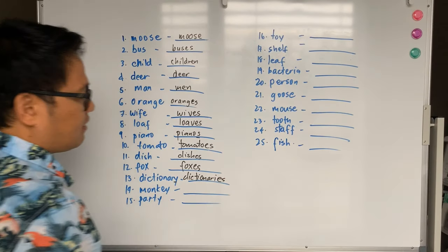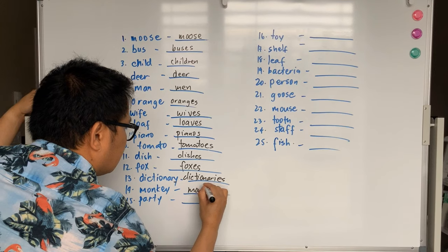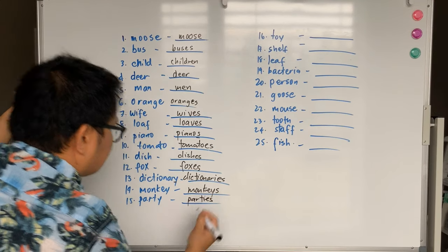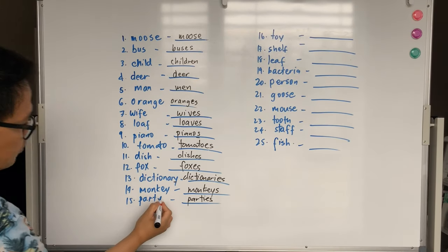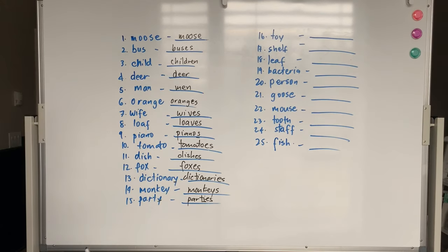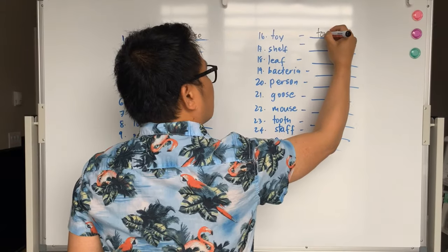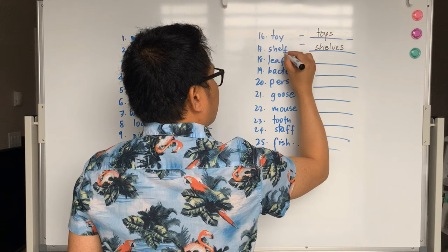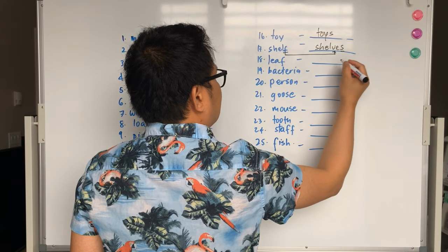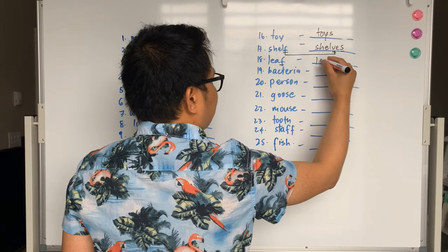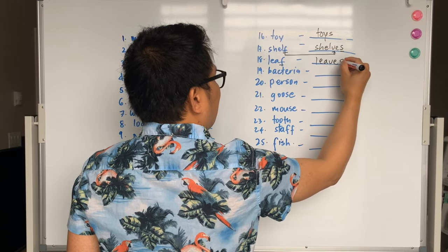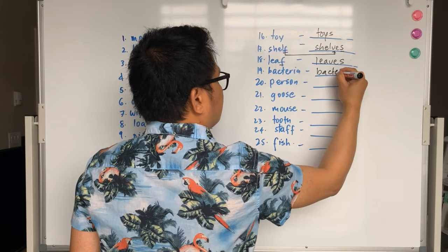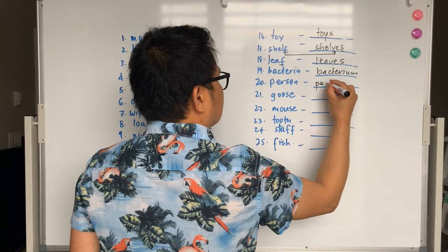Monkey will become monkeys, only S. Party becomes parties, change Y first to I and then add ES. Toy add S becomes toys. Shelf will become shelves, change F to VE then add S. Leaf, change F to VE and then add S so it will become leaves.